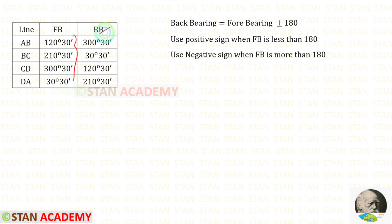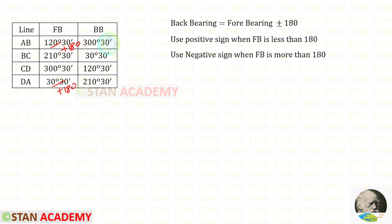Now let us find the back bearings. The formula to find the back bearing is: fore bearing plus or minus 180 degrees. If the fore bearing is less than 180, we have to use the positive sign. If the fore bearing is more than 180, we have to use the negative sign. These two bearings are less than 180, so with them we have to add 180 to get the back bearings. These two bearings are more than 180, so from them we have to subtract 180 to get the back bearings.